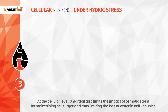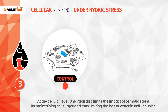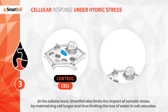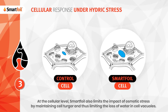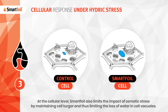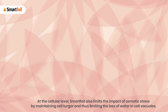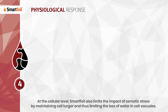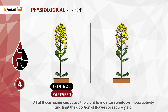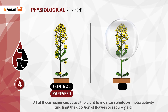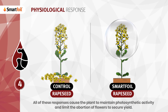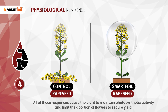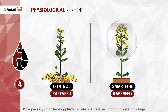At the cellular level, SmartFoil also limits the impact of osmotic stress by maintaining cell turgor and thus limiting the loss of water in cell vacuoles. All of these responses cause the plant to maintain photosynthetic activity and limit the abortion of flowers to secure yield.